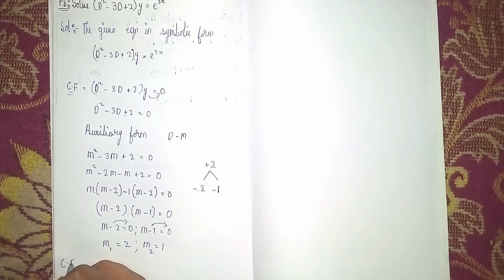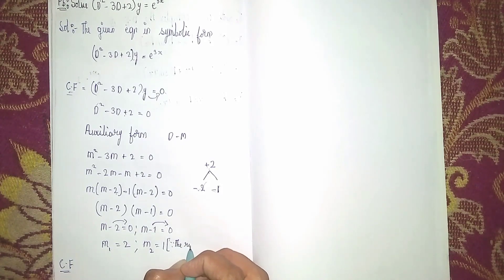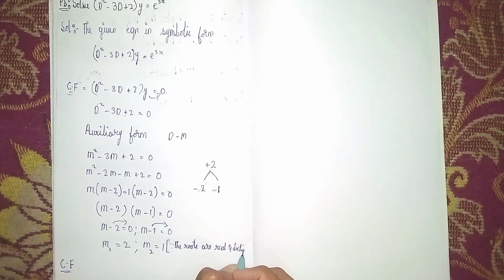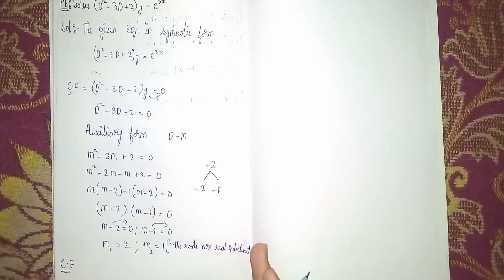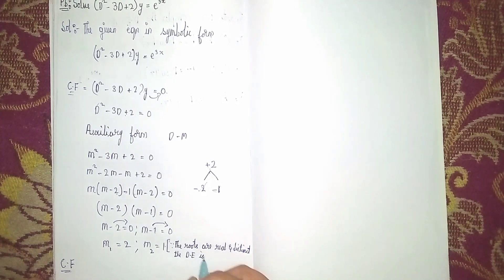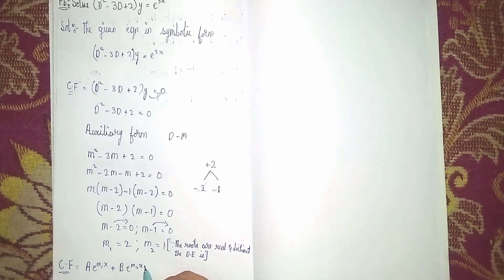For the complementary function, we identify the case: the roots are real and distinct — meaning m₁ = 1 and m₂ = 2 are different from each other. For this case, the complementary function is: CF = A·e^(m₁x) + B·e^(m₂x).